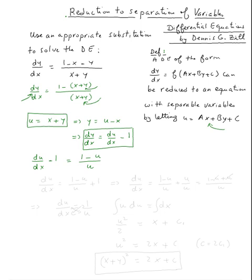Since we're going to solve this by separable variables, we add one to both sides. So du/dx equals (1 minus u) over u plus one, which means du/dx equals — using u as the common denominator — (1 minus u plus u) over u. The u terms cancel, so the equation becomes du/dx equal 1 over u.